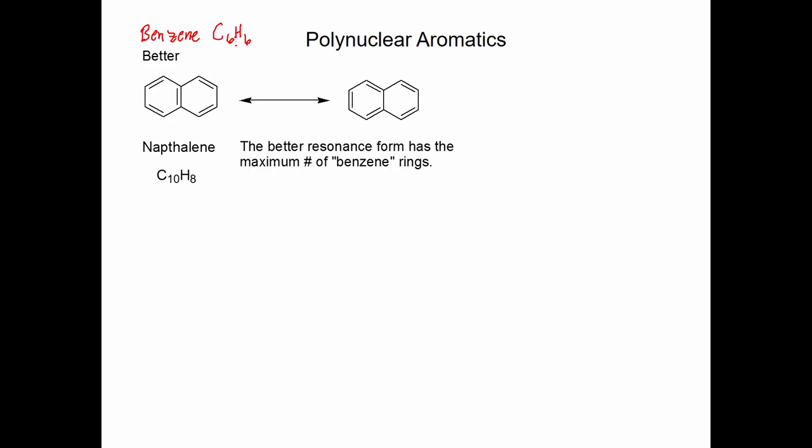When we draw multiple benzene rings fused together, here's an important point to remember, that the better resonance form has the maximum number of benzene rings. This resonance form on the left here we're going to say is better because when we look to identify benzene rings, we can find two of them. Never mind the fact that this double bond is depicted in the left ring. That's just an artistic representation. That has nothing to do with where the actual double bond is. There's two benzene rings. In this one, there's a benzene ring here, but if we look at this ring right here, it's not a benzene. So this is not going to be quite as stable. The better resonance form has the maximum number of benzene rings.